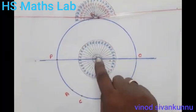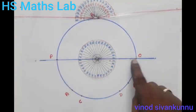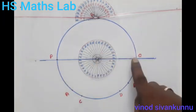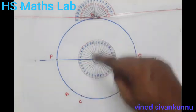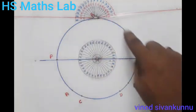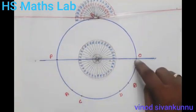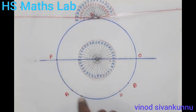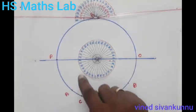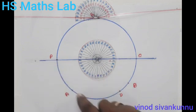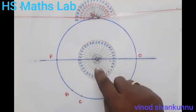Here, PQ is the diameter of the circle with the center O. This diameter PQ divides this circle into two equal halves. The first semicircle is PAQ and the second semicircle is PRQ. This is the center of the arc PAQ, so the arc PQ is 180 degrees.